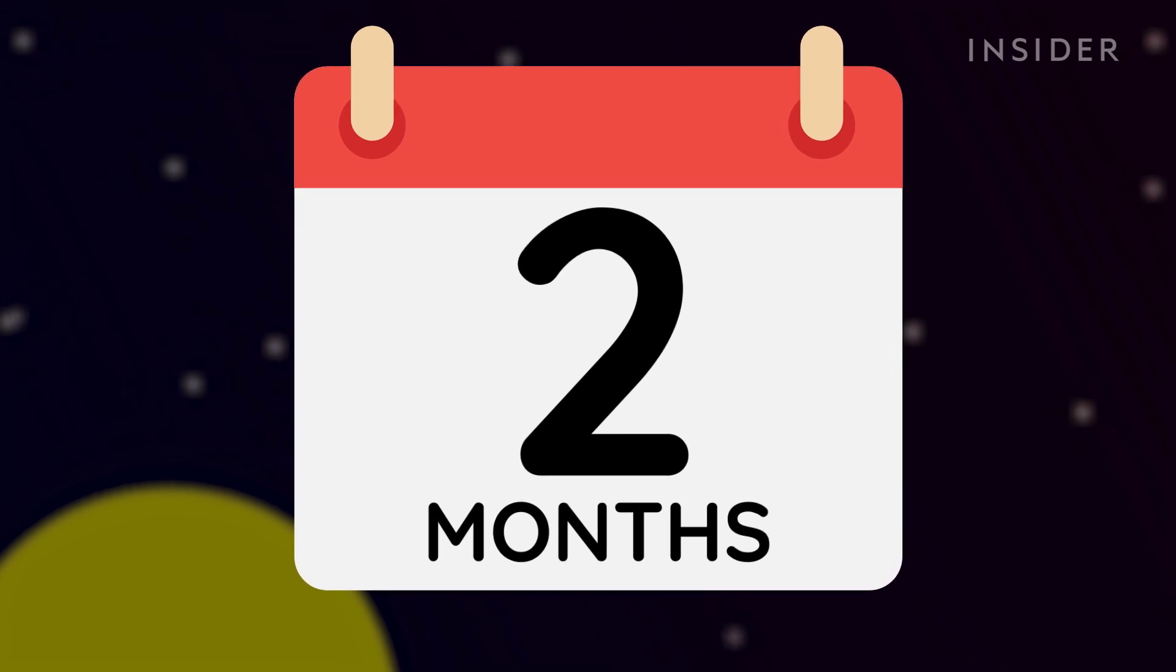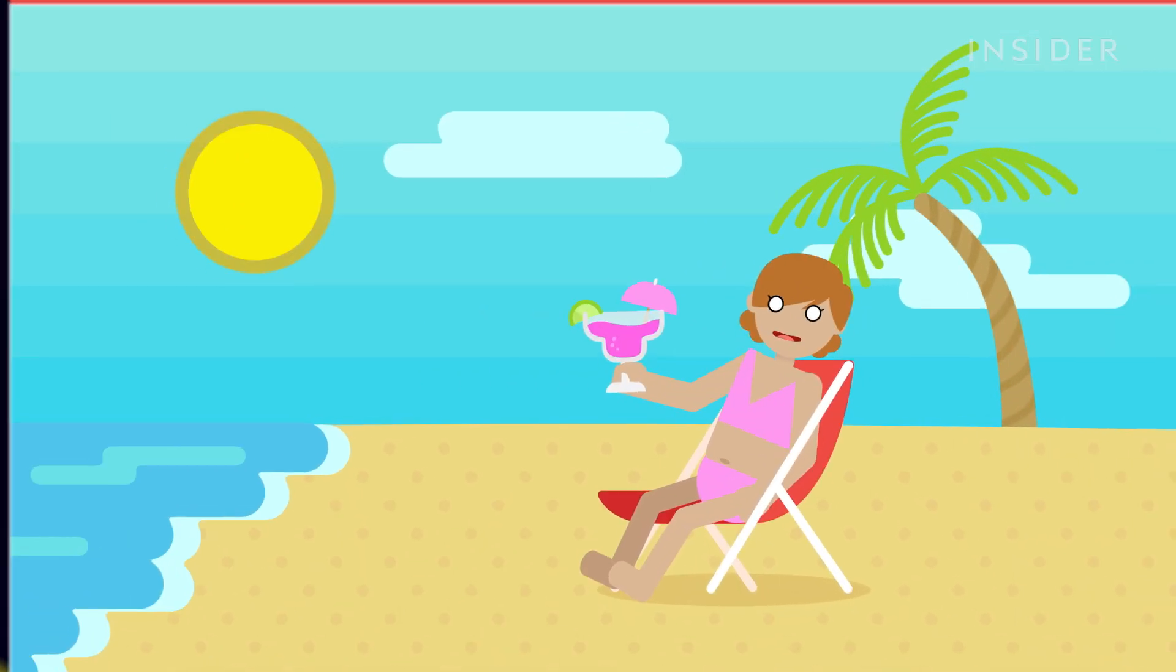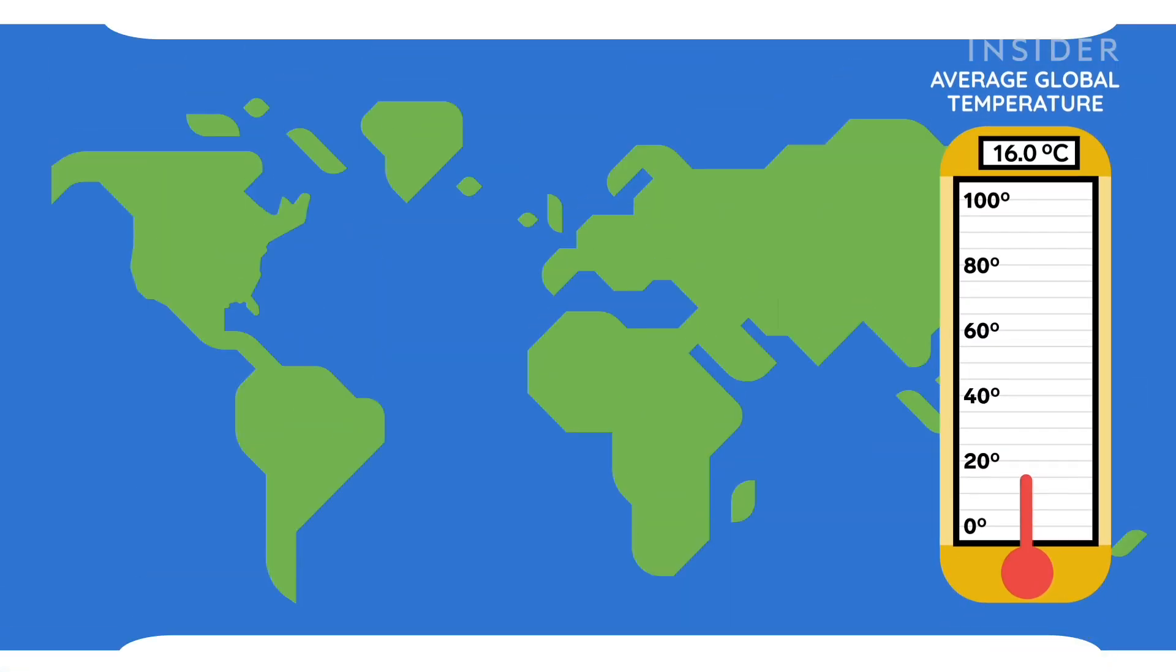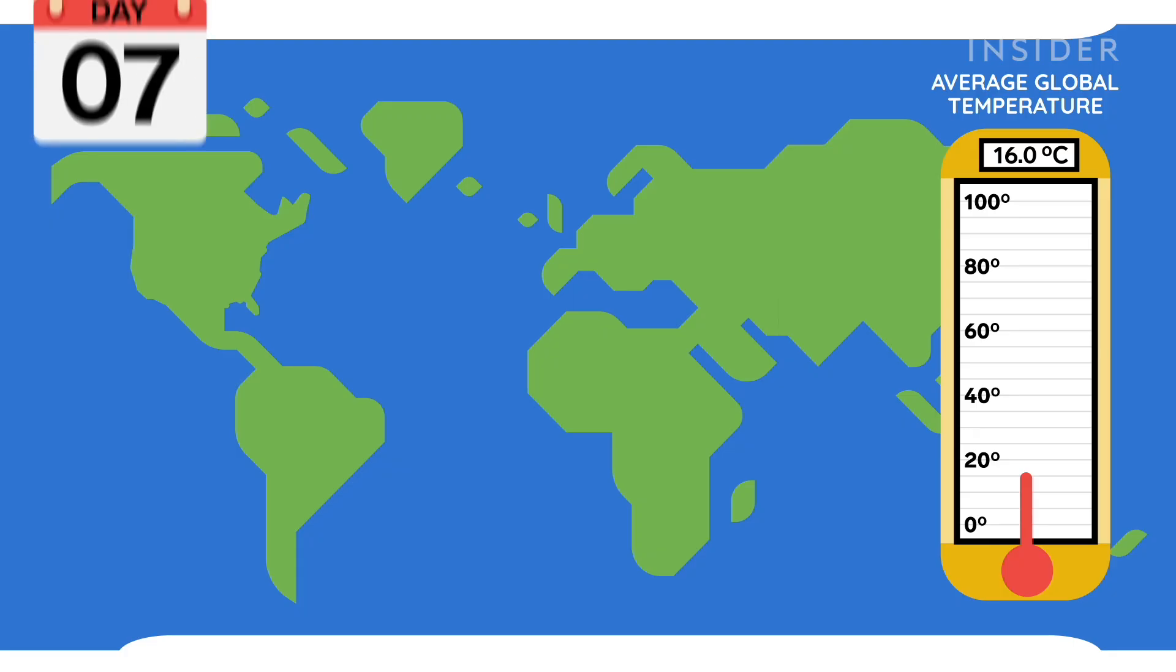Just two months. In the first week, you wouldn't notice much of a change. The average global temperature would climb less than one degree Celsius and hover around 16 degrees for another week.